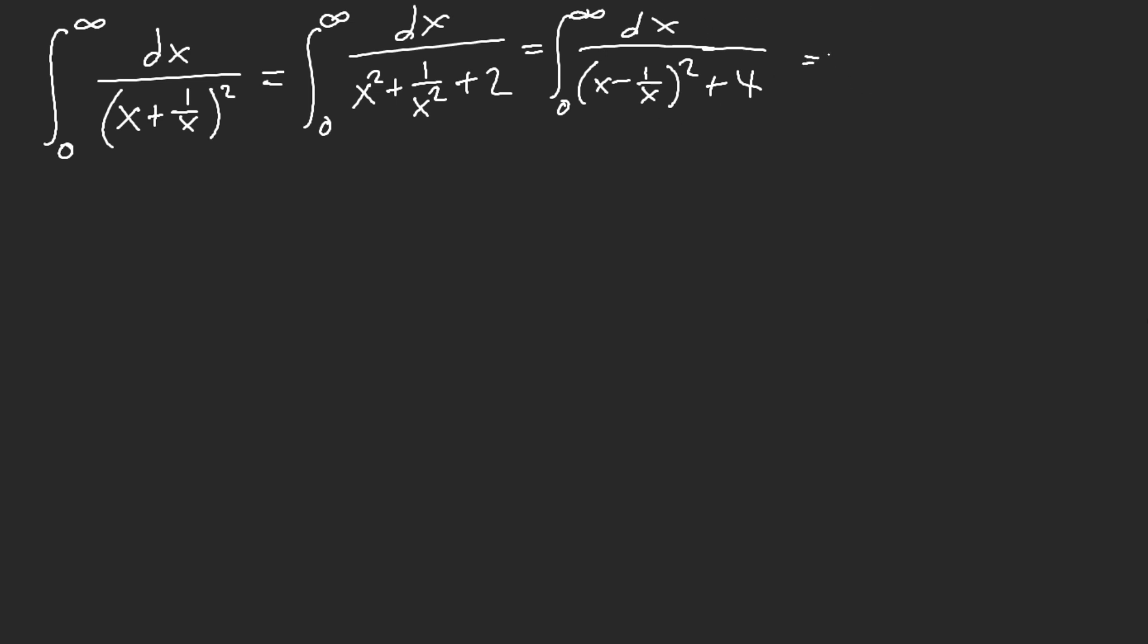And then technically here, you just do backhanded symmetry. You just do 1 half of negative infinity to infinity. And then you use Glasser's Master Theorem, pretty much. Glasser's Master Theorem says that this is equal to this. And then you can take away the symmetry again. So this is equal to this, technically, because they're even functions.